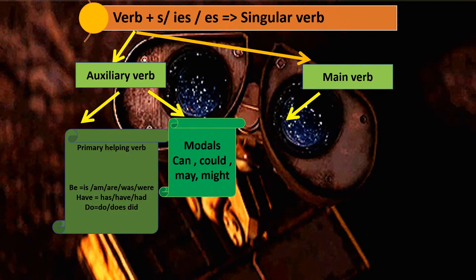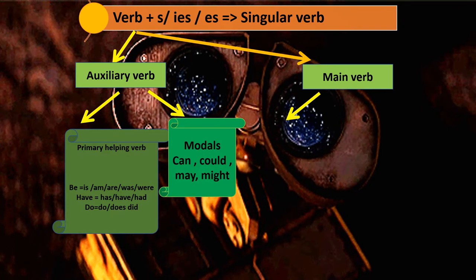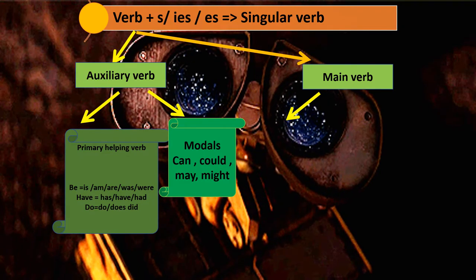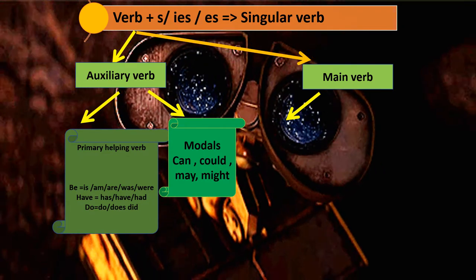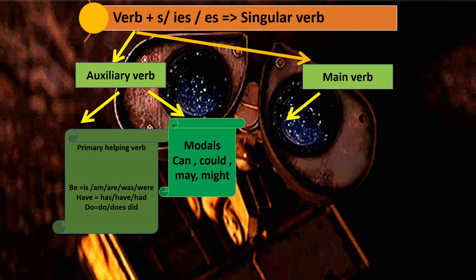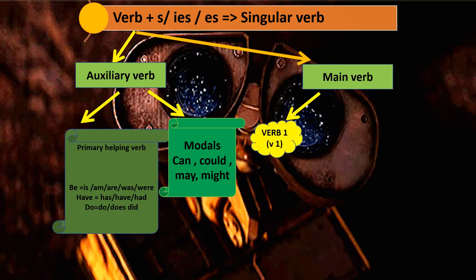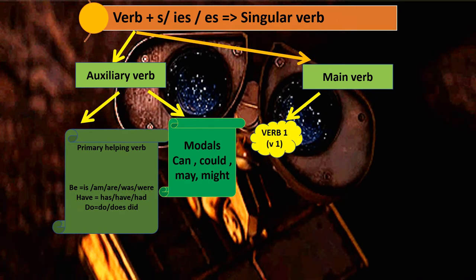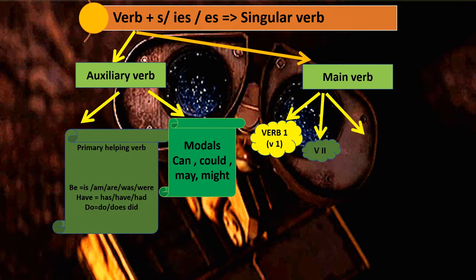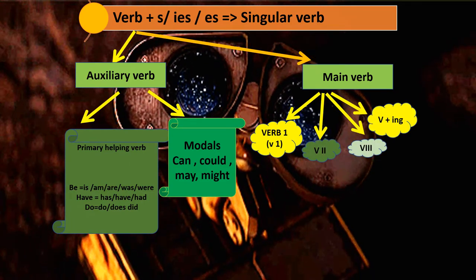Primary helping verbs and modal verbs both come under auxiliary verbs — they are the types of auxiliary verbs. Now let us move to the main verb. Main verbs have forms: Verb 1, Verb 2, Verb 3, Verb 4, and Verb 5 are there, but we will be covering up to V-I-N-G.